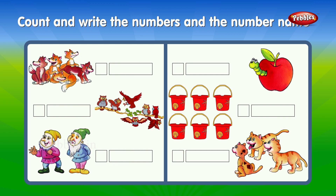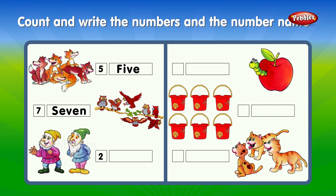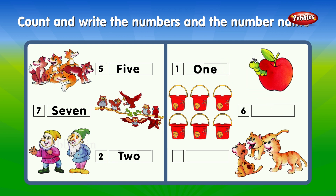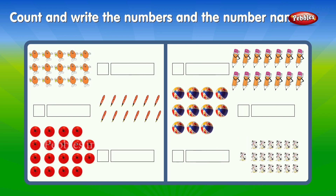Count and write the numbers and the number name. 5: F-I-V-E. 7: S-E-V-E-N. 2: T-W-O. 1: O-N-E. 6: S-I-X. 3: T-H-R-E-E.